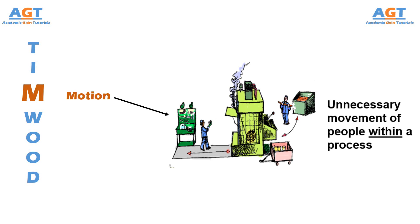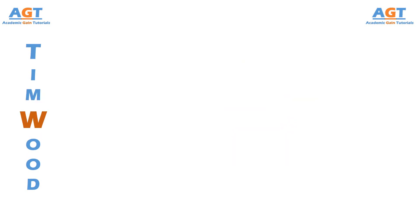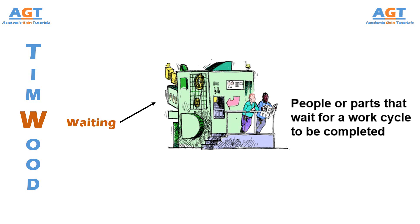The letter W stands for waiting, which specifies the people or parts that wait for a work cycle to be completed. This might indicate a customer waiting for his product, or a manufacturer waiting for the shipment of raw materials, or a part waiting for the production line to be empty.